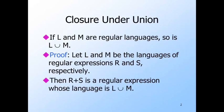Our first closure property will be union. That is, if L and M are regular languages, so is L union M. To prove this fact, we use the regular expressions R and S, whose languages are L and M respectively. We know L and M have regular expressions because they are assumed to be regular languages. Then R plus S is also a regular expression, and we know its language is the union of L and M.